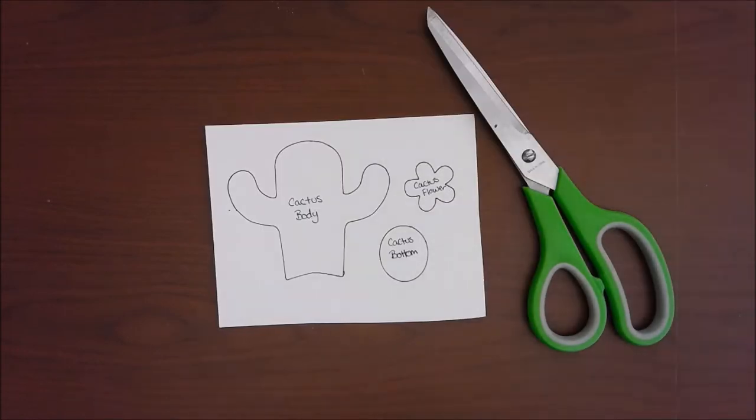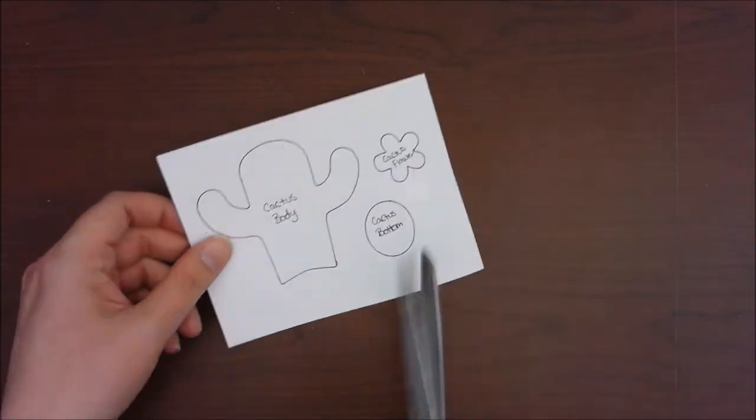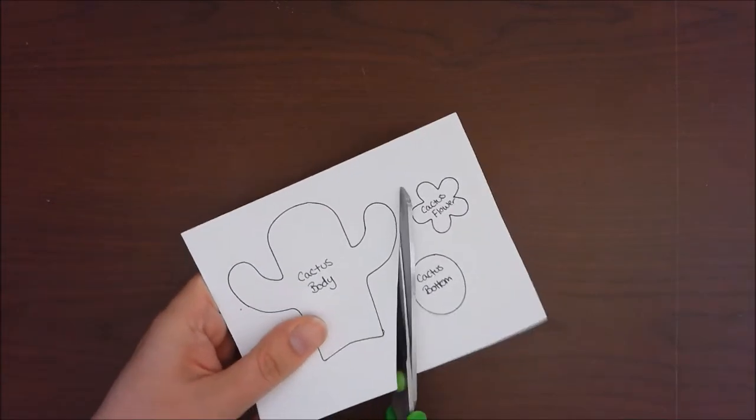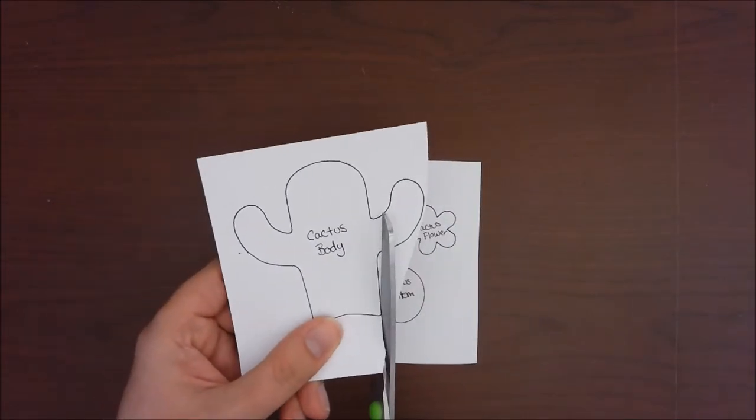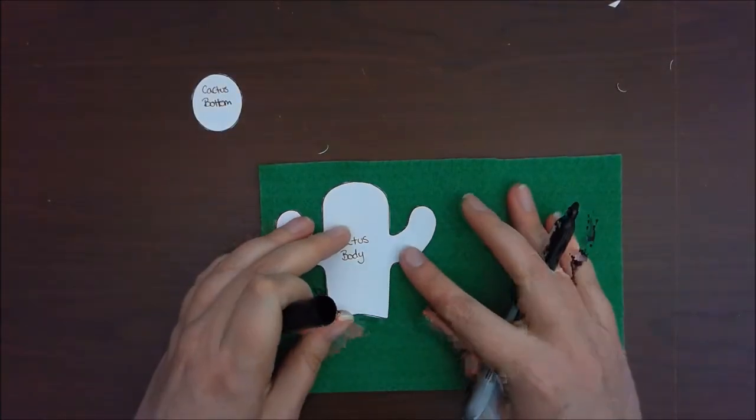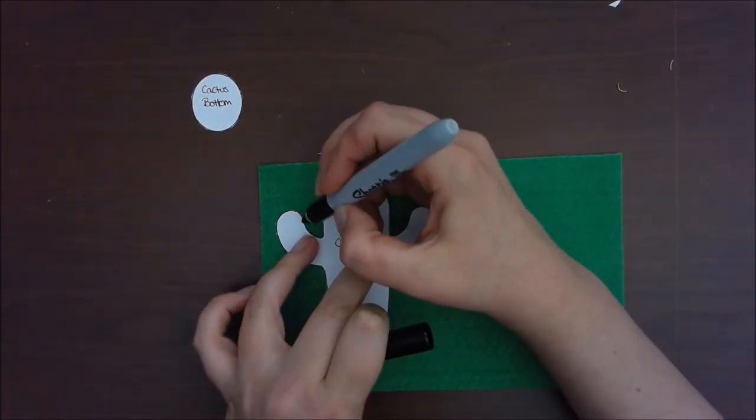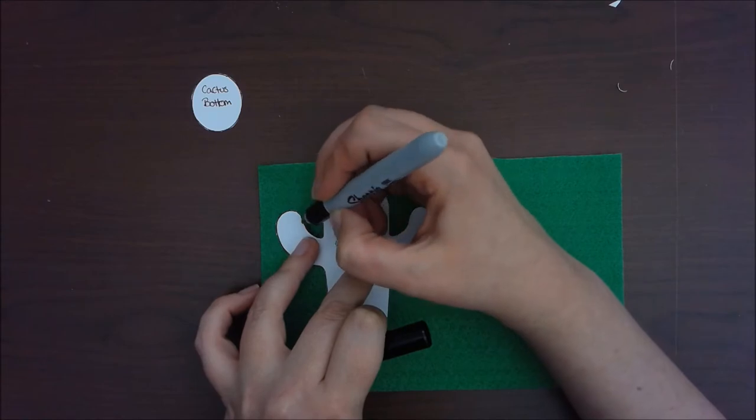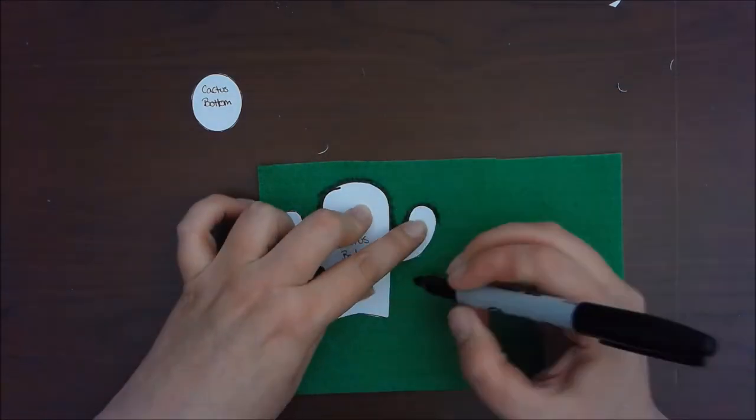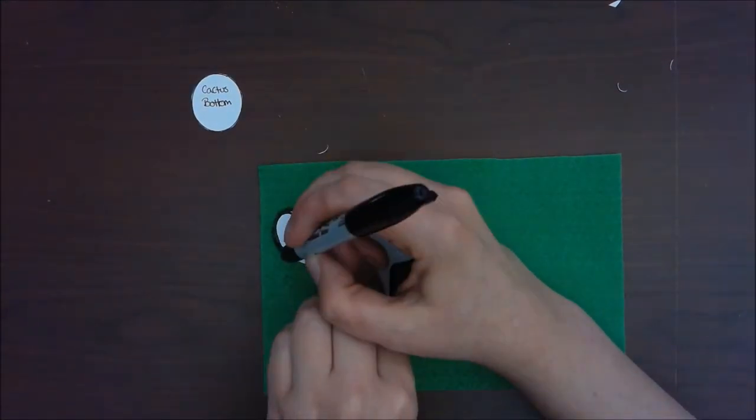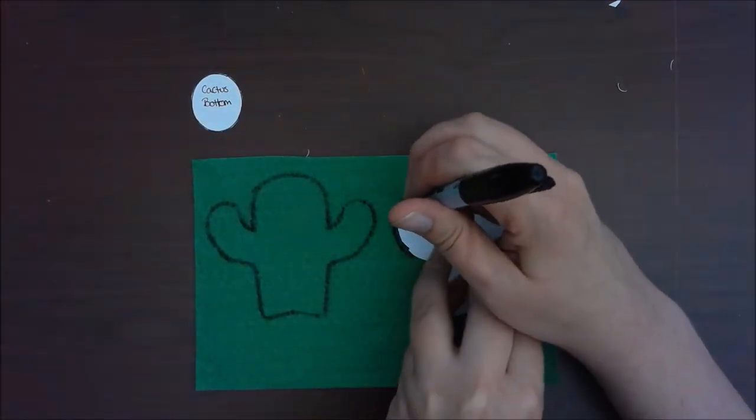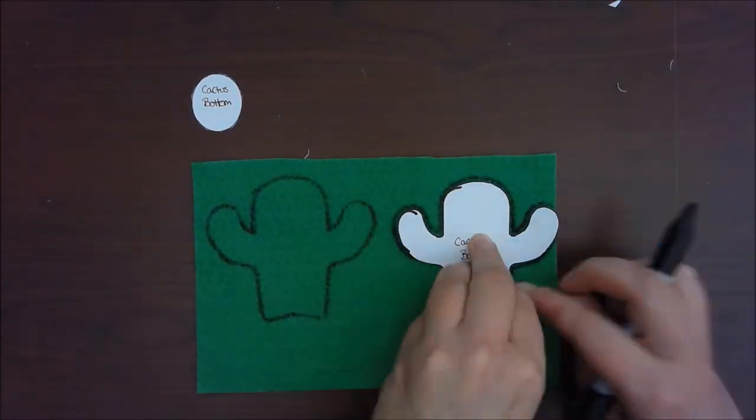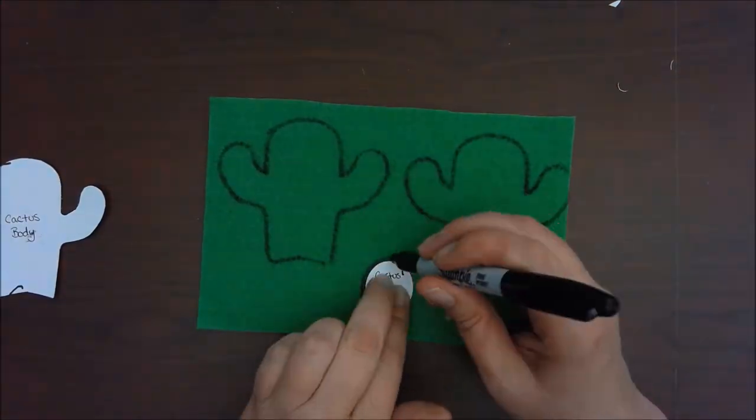Our first step is to cut out our stencils. Once you're done cutting, you're going to want to trace your stencil onto a piece of felt. You can trace it twice or you can fold your felt in half and only trace once and cut once. We're also going to want to trace our cactus bottom piece.